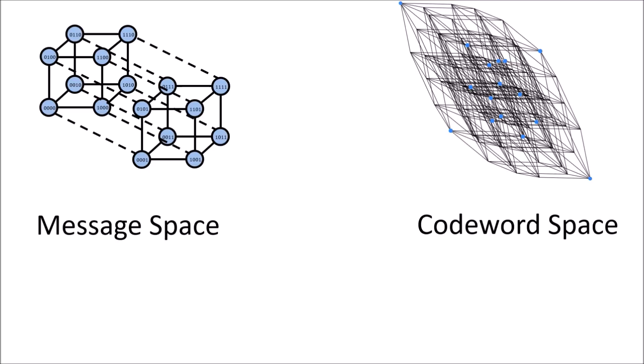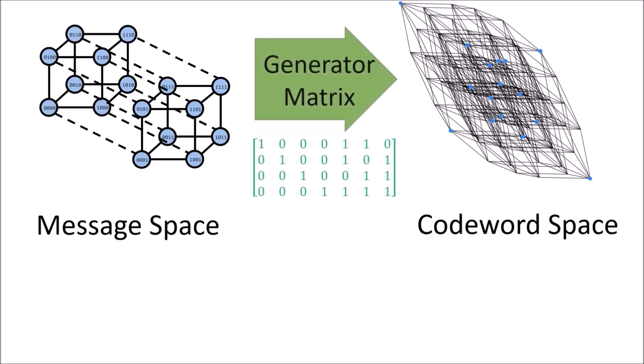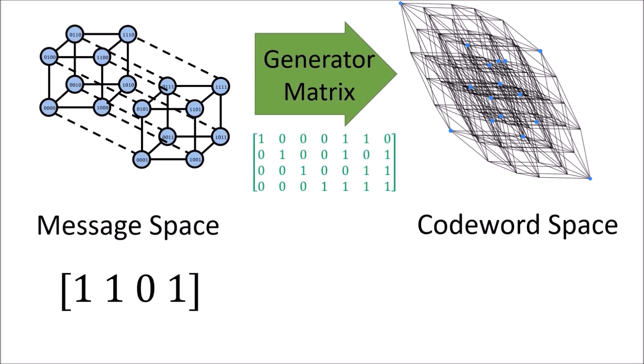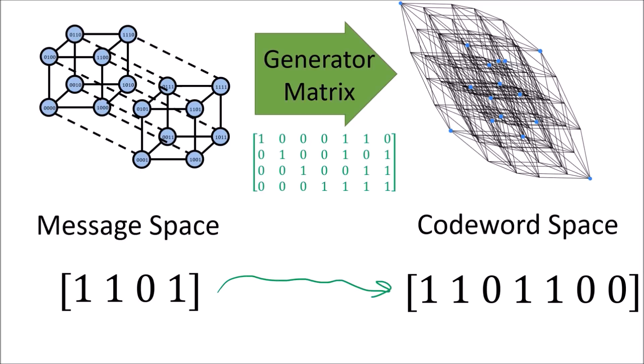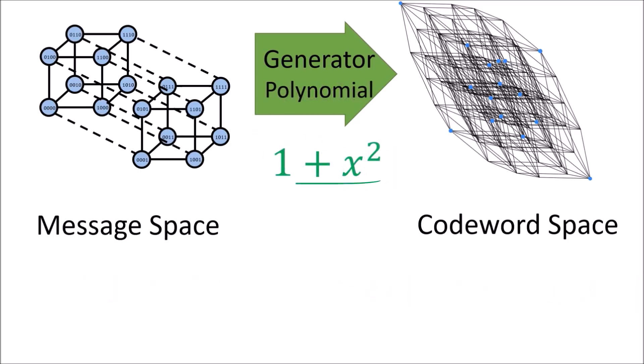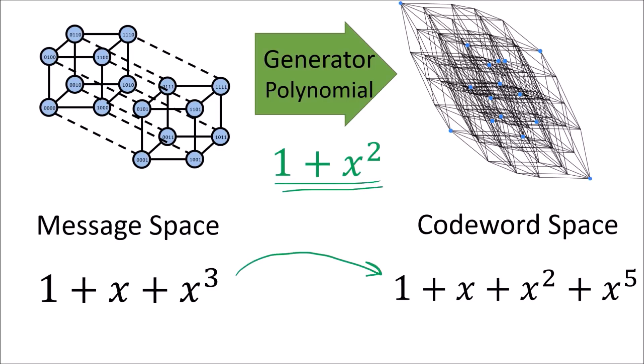Previously, we used a generator matrix to transform messages into the valid codewords. For polynomial codes instead, we multiply a message polynomial by a special generator polynomial to get the valid codeword polynomials. Even though the generator matrix and generator polynomial are different approaches to generating valid codewords, the main idea behind them is the same.